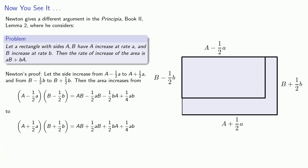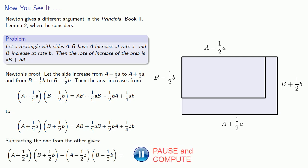And so our change is going to be the difference. So we'll subtract the one from the other to get ab plus ba, which is what Newton claimed it was.